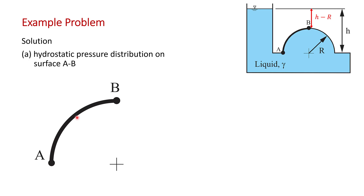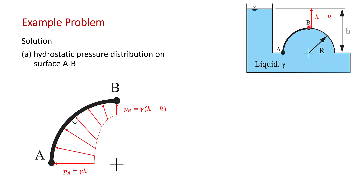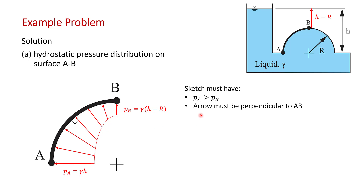The first part is to draw the hydrostatic pressure distribution on surface AB. We start by drawing the pressure at A — point A is at depth H, so the pressure is γH. The pressure at B acts normal to B, and it's at a shallower depth of H minus R, so it's a smaller arrow. Once you've got those two basic arrows in, you put the remainder of the pressure distribution in, being careful to keep them normal to the surface. On a midterm, I'd check that PA is visibly bigger than PB, since pressure increases with depth, and that arrows are reasonably perpendicular to surface AB.